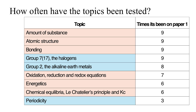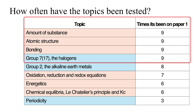One way of deciding on your priorities is to look at which topics have been tested on a year-by-year basis. Of the nine AS Chemistry Paper 1s that there have been, there are four topics that have been assessed as part of the long answer questions every single year. Those are amount of substance, atomic structure, bonding, and the halogens — that is group 7. When deciding on your priorities, this is a really good place to start, because there are always written response questions for these topics.